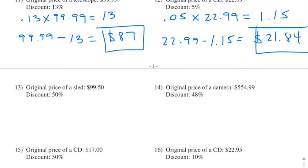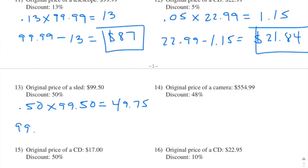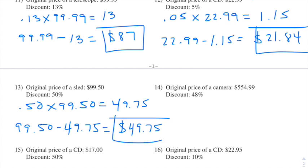Number thirteen: the original price of a sled is $99.50 and the discount is 50%. We take 50% of 99.50 and get $49.75. We then do $99.50 minus $49.75 and get $49.75 — which makes sense because 50% is just half of the original price, and half of $99.50 is $49.75.